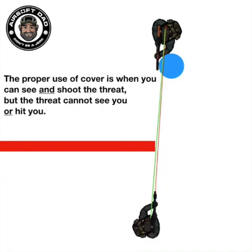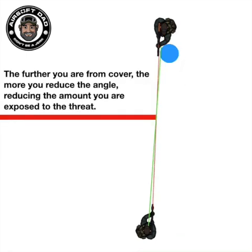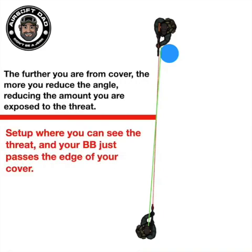As players, we want to set ourselves at an angle where we can see or hit the opposing player, but the opposing player cannot see or hit us. A good rule of thumb is that if you can touch the cover, you're too close to the cover or the pivot point. The further we are from the pivot point, the more leverage or protection we have from the opposing player. Set yourself up so that you can see the opposing player and your BB just clears the pivot point.